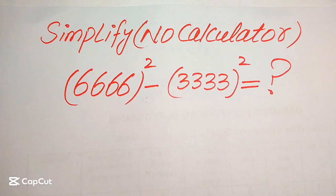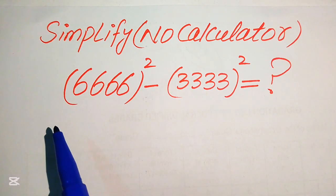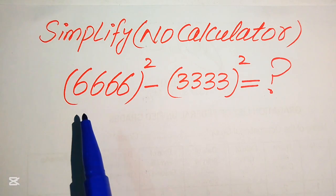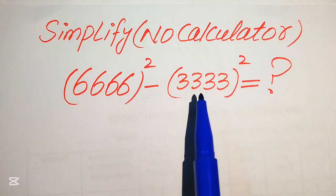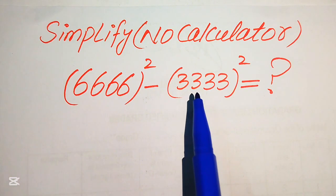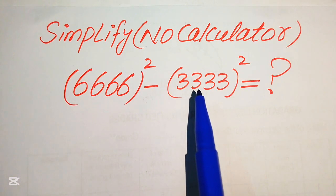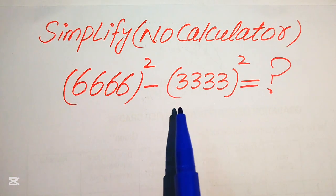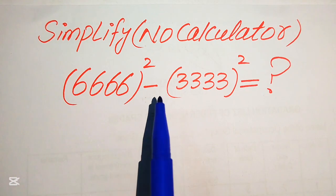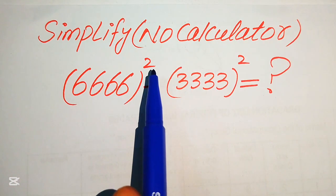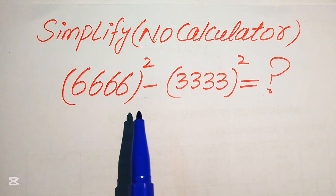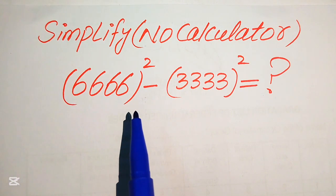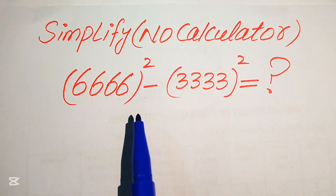Hello everyone. How to simplify this nice algebraic expression: 6666 whole square minus 3333 whole square, and we can just simplify this into simplified form. But remember, a calculator is not allowed in this problem, which means we will show all of the working on paper. I hope you like this method.